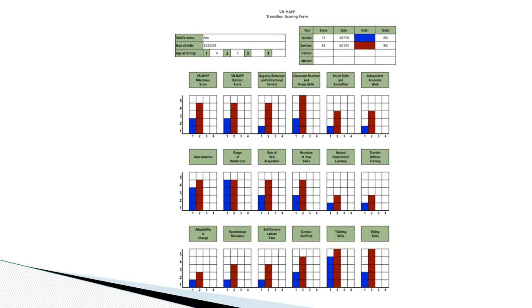The next section, item 15, requires you to first add scores from the independent play sections of the Milestone Assessment in all three levels and then use the score to determine the score for this section of the transition assessment.